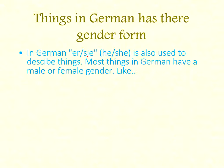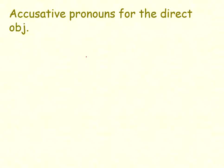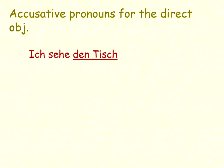In German, nouns have three gender forms and all nouns have an article. It does not mean that like in English we use 'it' for everything — in German we change as per their article. If the article is masculine, we change 'er' to 'ihn.' If the article is feminine, we change it to 'sie.' If the article is neutral, we change it to 'es.' Let's see with examples how we change them.